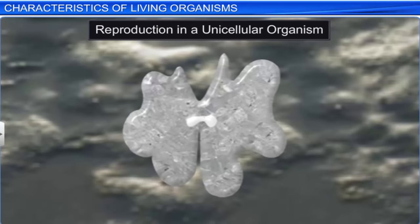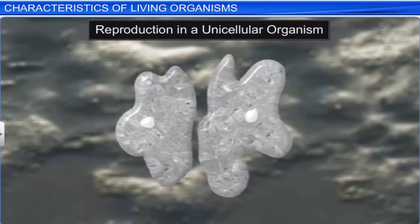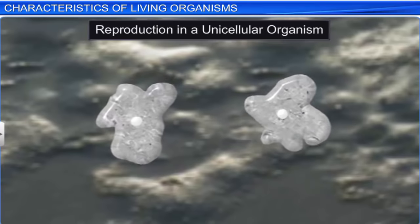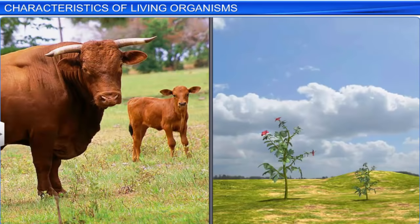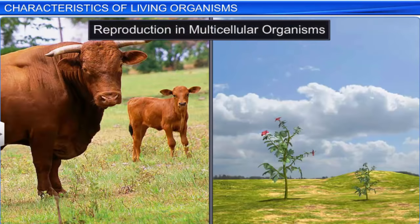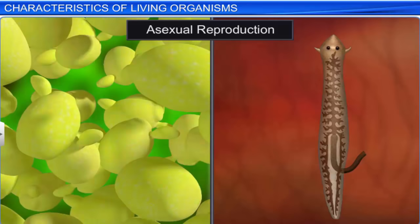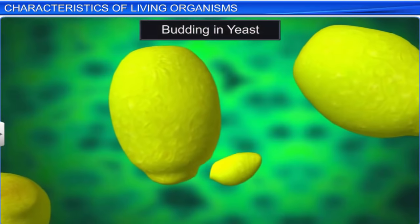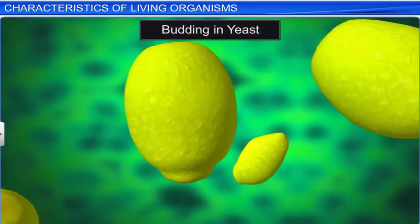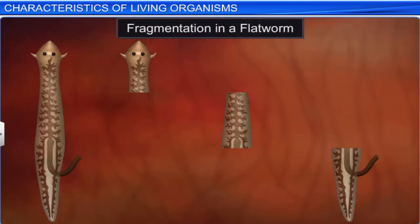In unicellular organisms, reproduction and growth are synonymous, as both lead to an increase in the number of cells. This is not the case with multicellular organisms, where reproduction leads to the creation of an offspring. These organisms reproduce either sexually or asexually. Sexual reproduction can be seen in higher organisms like man and animals. Asexual reproduction can be seen in lower organisms, through budding as seen in yeast, or through fragmentation as observed in flat worm.